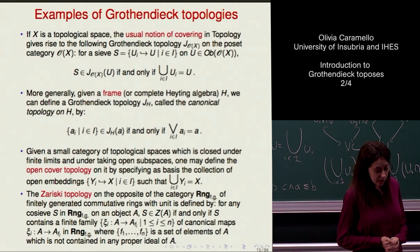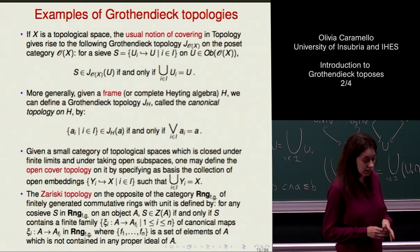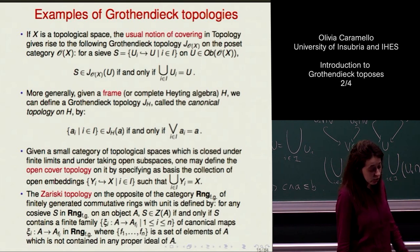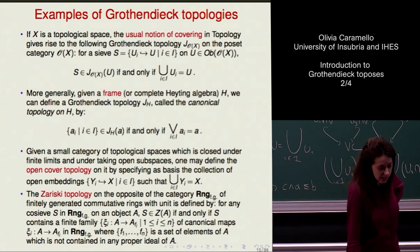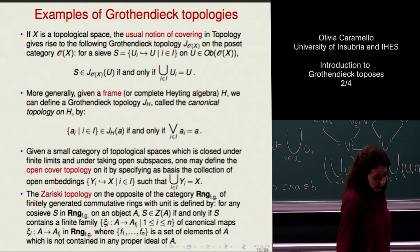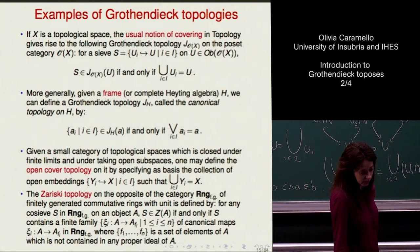Suppose you have a small category of topological spaces which is closed under finite limits and under taking open subspaces. In such a situation, it is natural to define a Grothendieck topology called the open cover topology by specifying, as a generating basis, the collection of open embeddings which cover a given space.